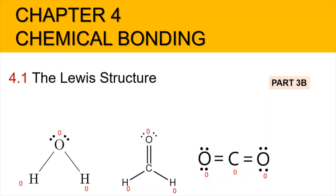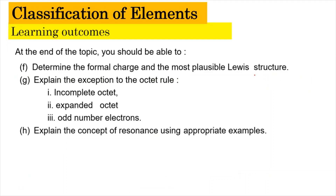Hi, Assalamualaikum and a very good morning. We are still in Chapter 4 Chemical Bonding and now we are in the subtopic of 4.1 Lewis Structure part 3b. In this video we're going to look into the determination of the formal charge and hence determine the most possible Lewis structure, using the formal charge. This is interrelated with the previous video.